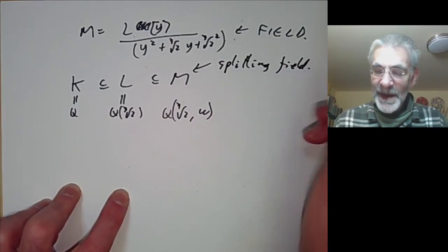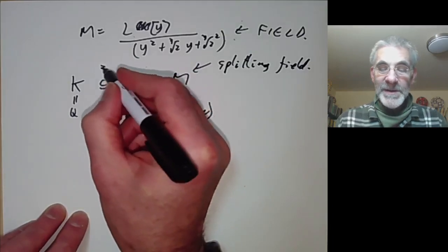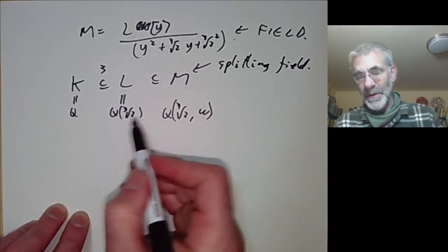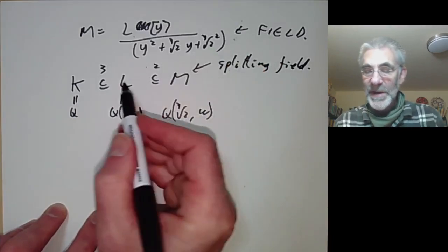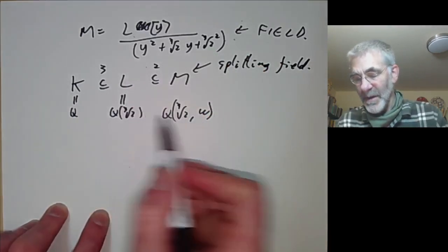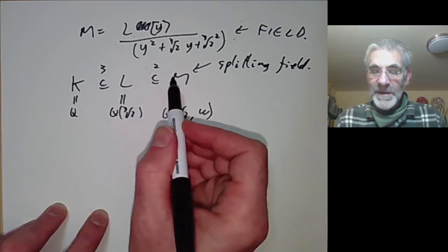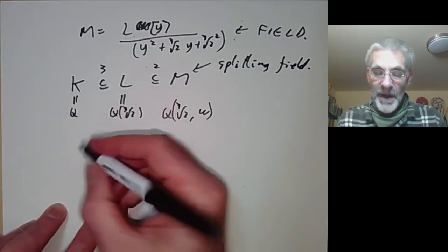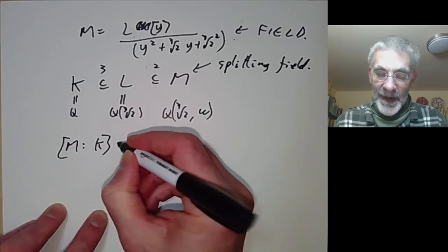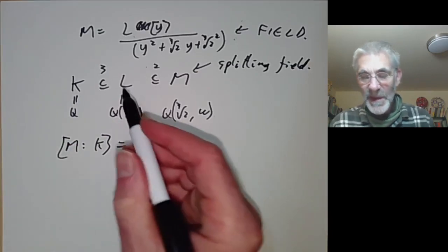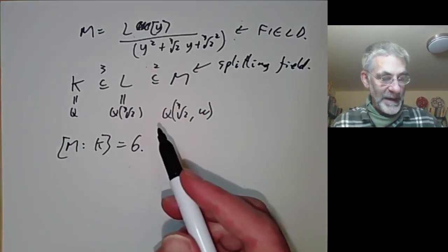Let's work out the degree. The extension L over K has degree 3, since we adjoined a root of a cubic. The extension M over L has degree 2. So altogether M over K has degree 6. We've found a splitting field of x³ − 2 which has degree 6 over Q.